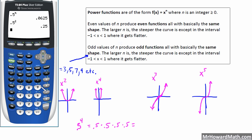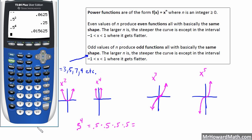So between negative 1 and 1, you're raising a value that is a decimal between 0 and 1 to a large power, giving you a much smaller number. If we raise 0.5, or one half, to the 6th power, we're going to get an even smaller number, so our y value is even flatter than when we raised it to the 4th power. And indeed, 0.5 to the 6th is 0.015, which is even smaller than 0.0625. So that's what's going on there.